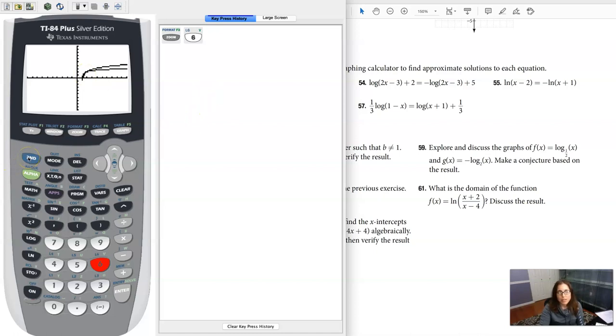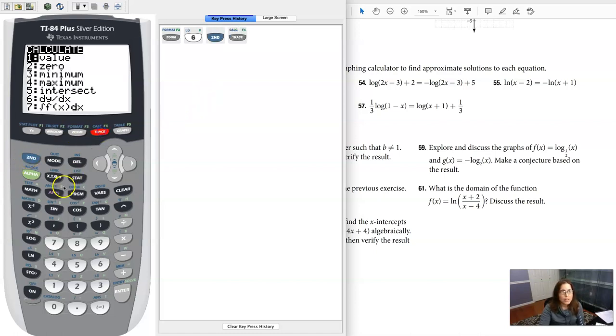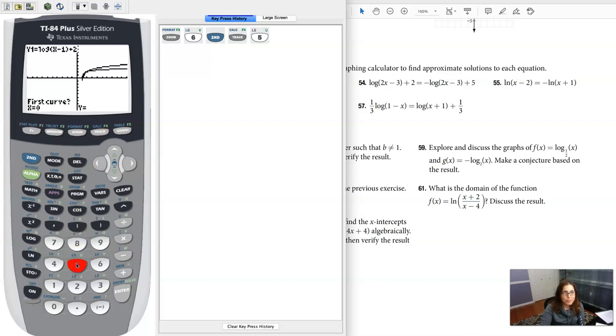So let's try and calculate this. I'm going to hit second and trace. Option 5 is our intersect and right now you can see that the y value is blank and that's because if you look at this logarithmic equation, the argument is x minus 1.